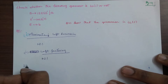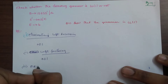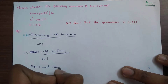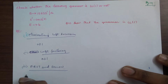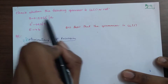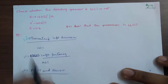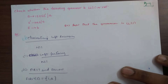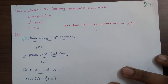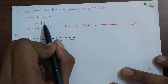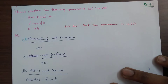Third step: First and Follow calculation. First of capital S — S produces either small 'i' or small 'e'. They have small letters, so no problem: small 'a', small 'i'. First of S-dash — it produces either small 'e' or epsilon. So First(S') = { e, ε }.